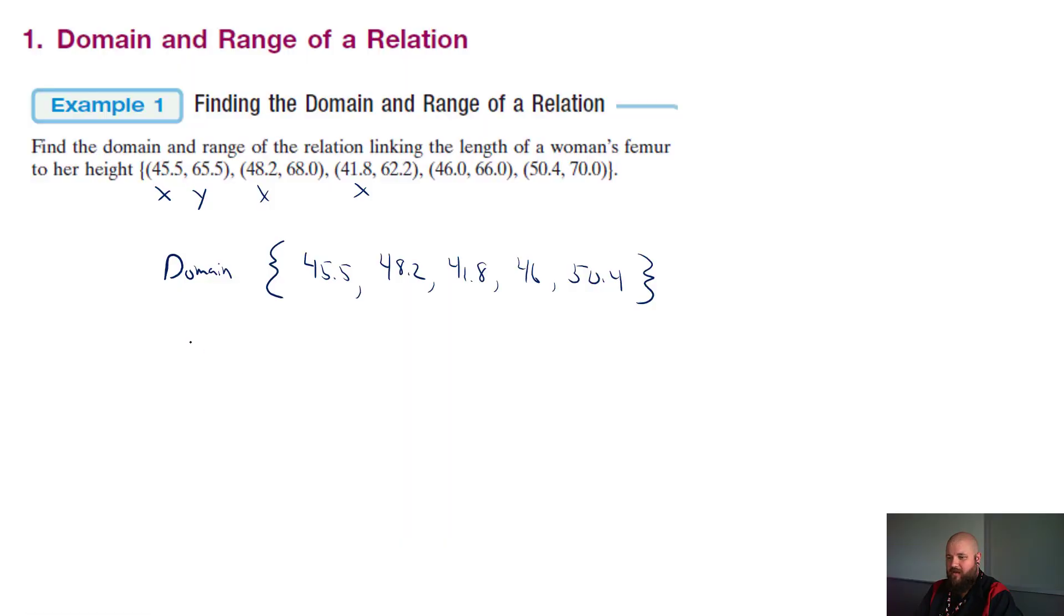So now we're going to look at our range values. If we're given an ordered pair like this, so it's going to be your y. So we'll correspond here to that. We have our 65.5. So that takes care of our domain and range dealt with this ordered pair.